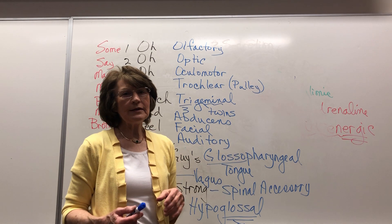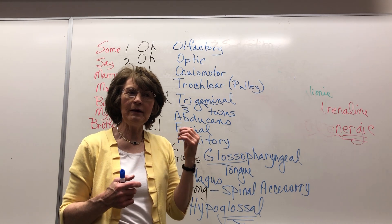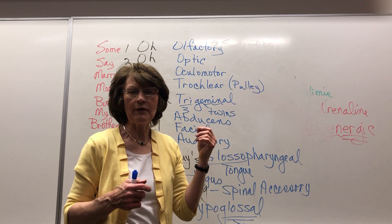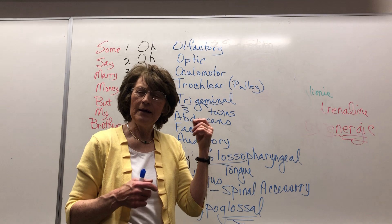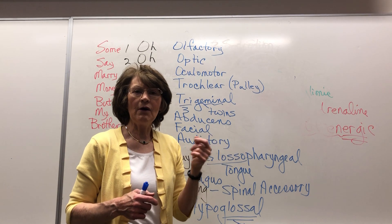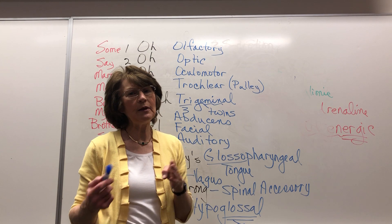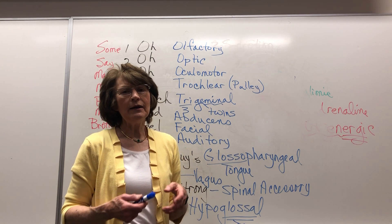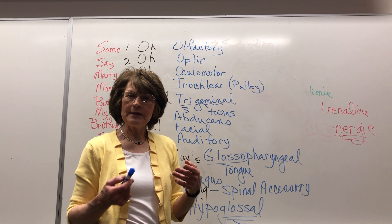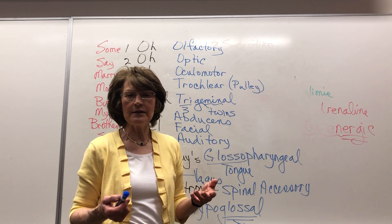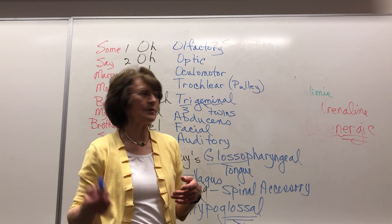Auditory: have the person close their eyes, use a tuning fork or make a sound on one side of their head, and see if they can hear it. The other part of the auditory nerve — vestibulocochlear — tests balance. Can they balance? Try standing on one foot with eyes closed; that indicates whether it's working.